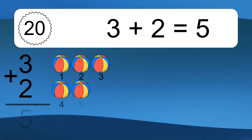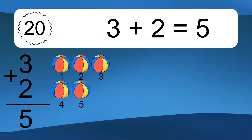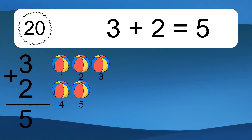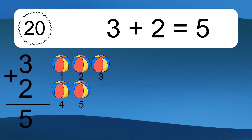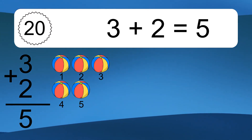3 plus 2 equals 5. Let's count it. 1, 2, 3, 4, 5.